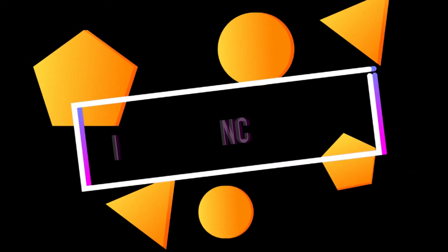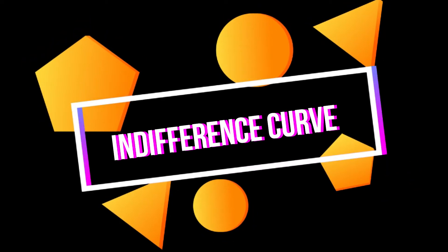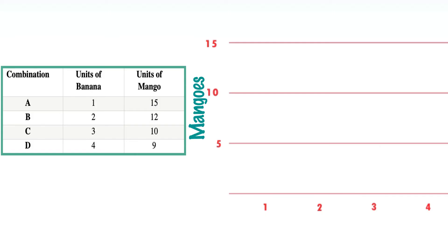When we plot this concept graphically, we derive what is called an indifference curve. Let us illustrate the indifference curve using a consumer consuming two goods, mango and banana, and having four combinations yielding the same level of satisfaction. In this table, in combination A, the consumer consumes 1 unit of banana and 15 units of mango and derives a particular level of satisfaction. In combination B, when he increases the consumption of banana to 2 units, the consumption of mango decreases to 12 to have the same level of satisfaction as combination A.